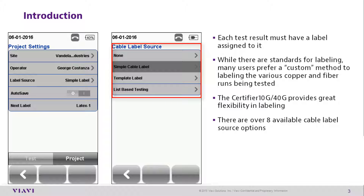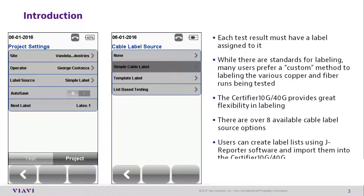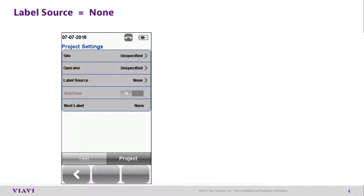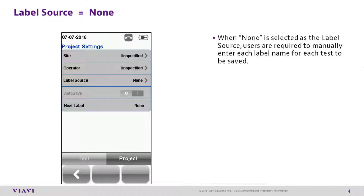There are several cable label source options available on the certifier. Users can create label lists using JReporter software and then import them into the certifier. When None is selected as the label source, users are required to manually enter each label name for each test to be saved.